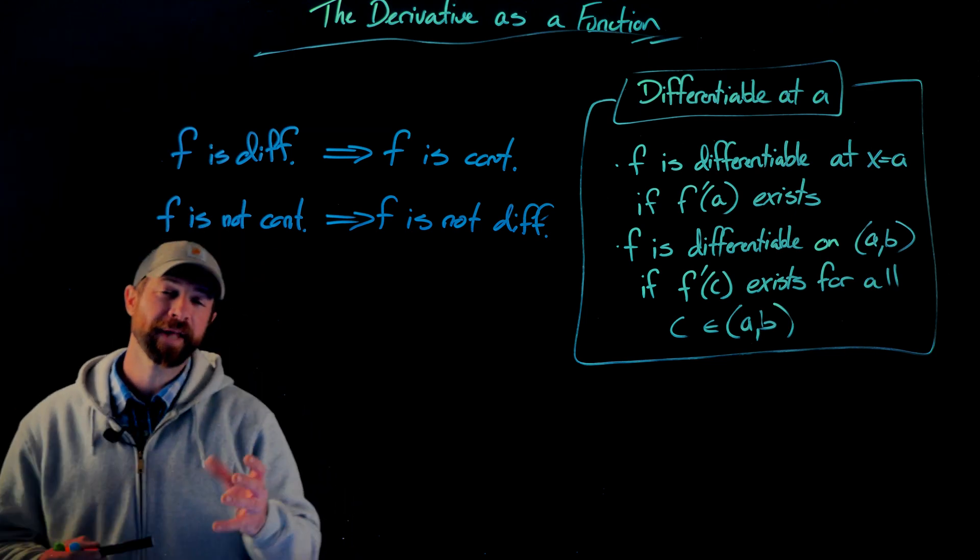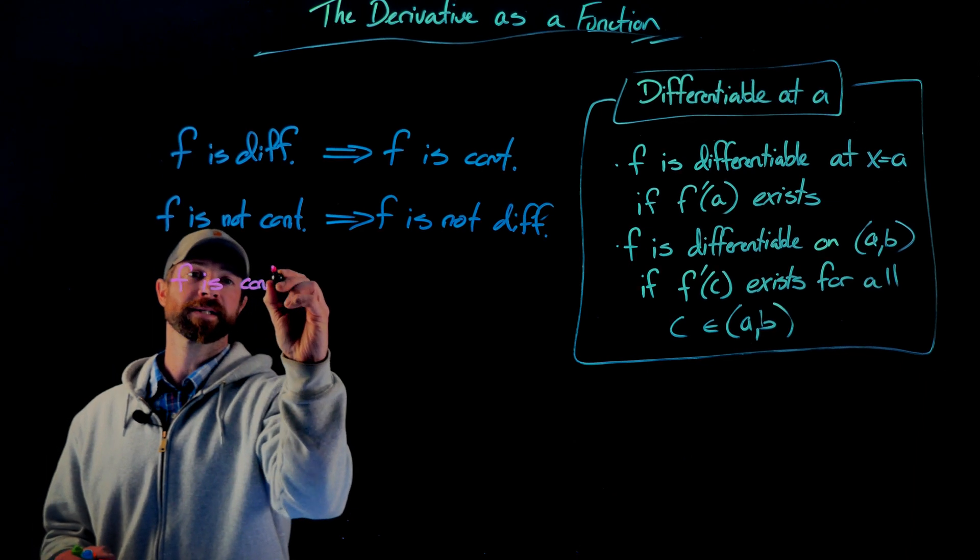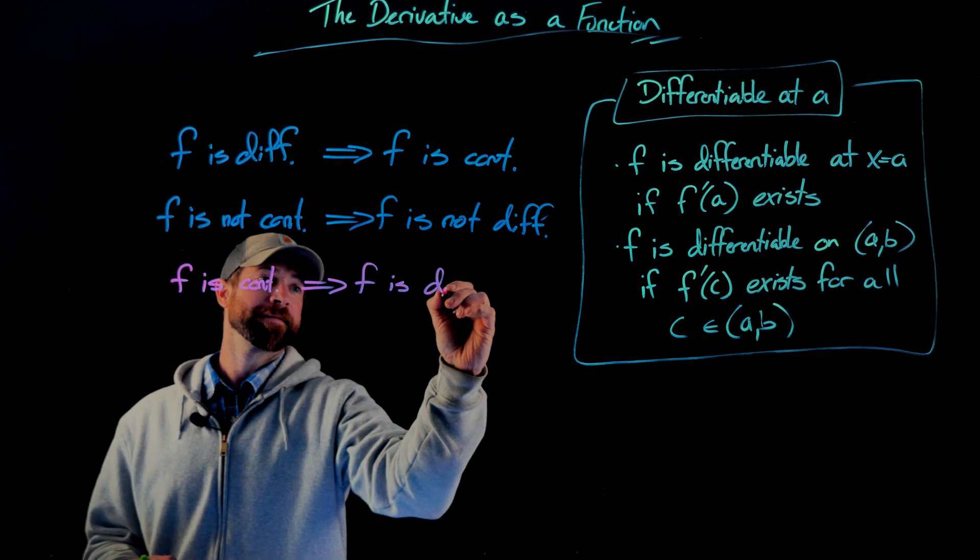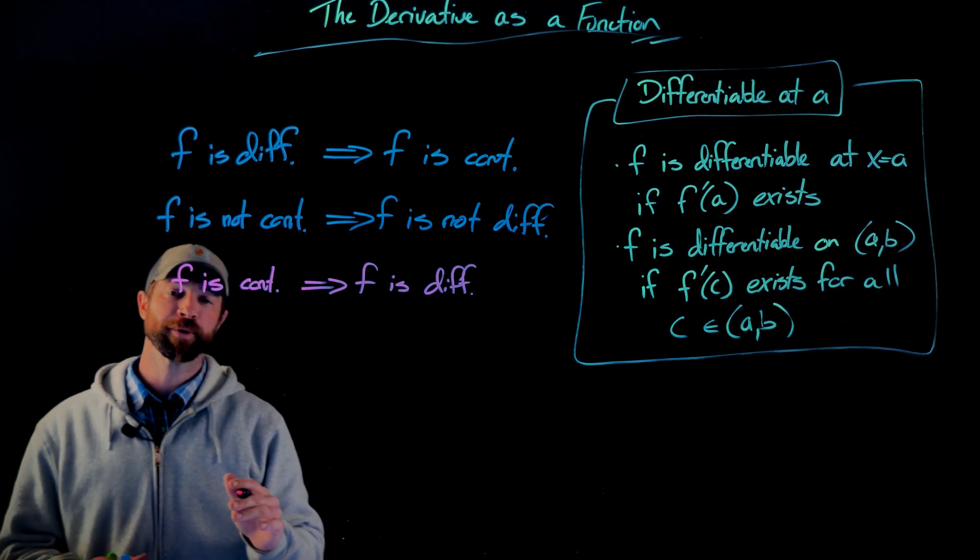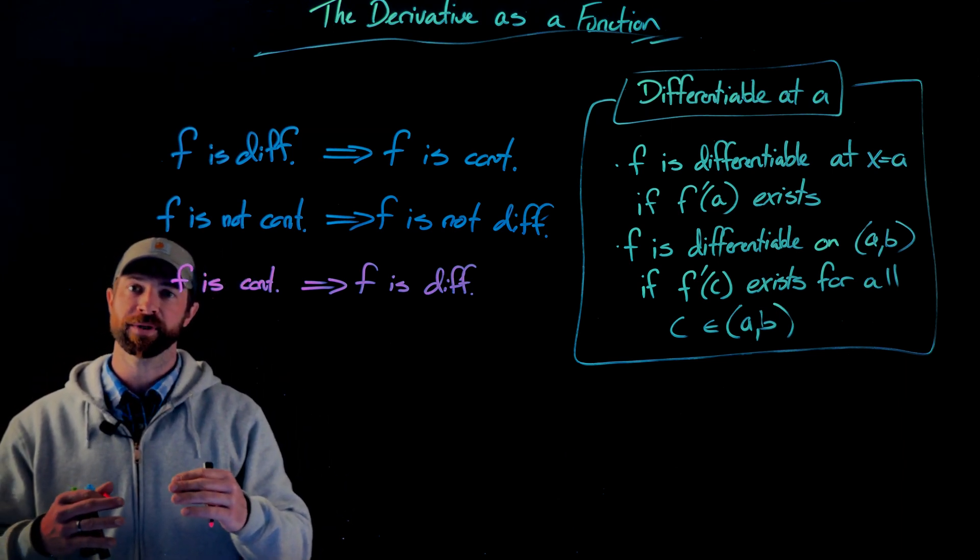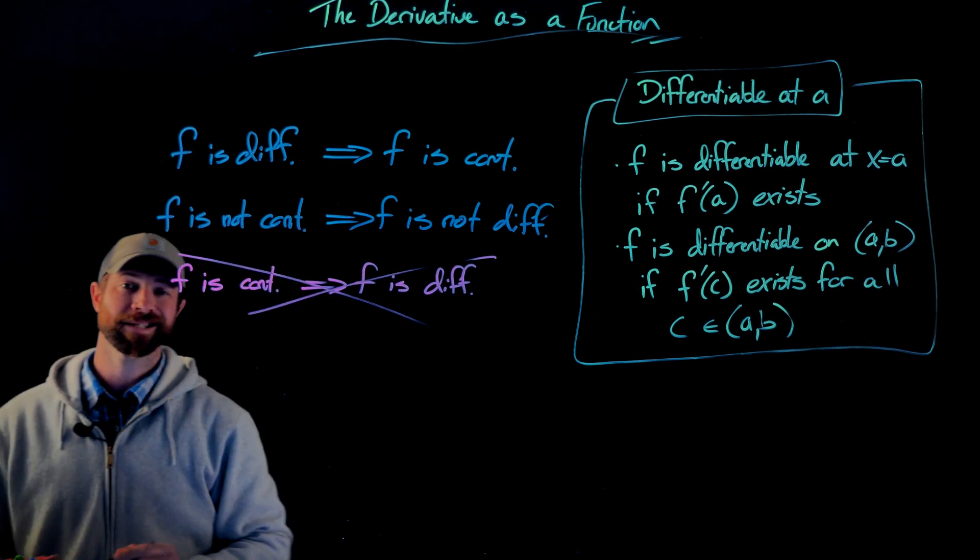Some people then make the wrong assumption that if f is continuous, that implies that f is differentiable. But we saw an example where that wasn't true. We looked at the absolute value of x. It was continuous at x equals zero, but it was not differentiable. So this statement here is not true.